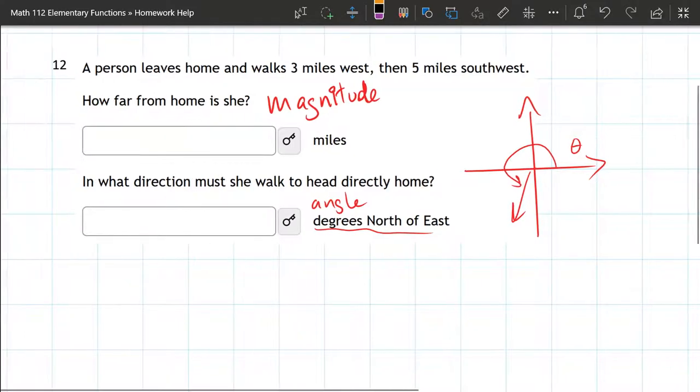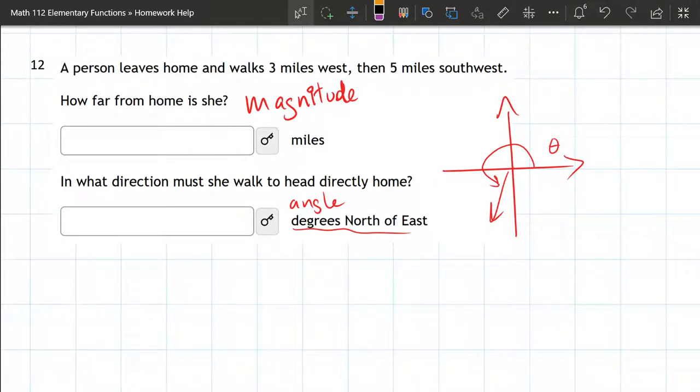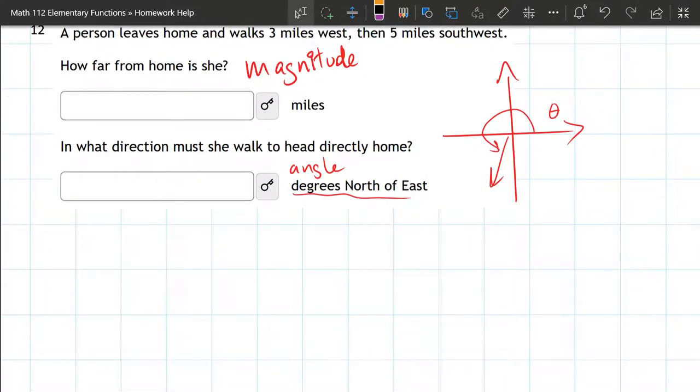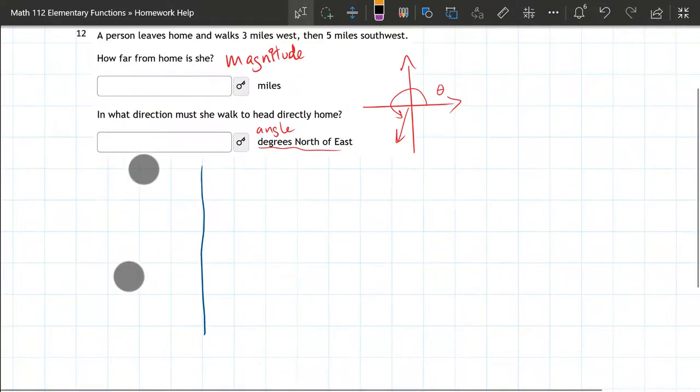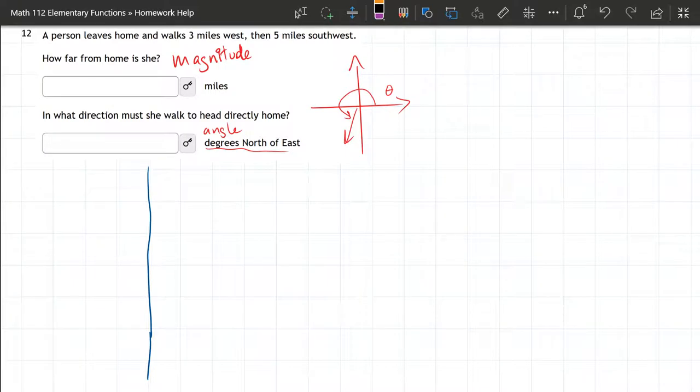Now we need to figure out what two vectors make this walk. The first one is super easy: three miles west. We're going to draw a grid right here. Three miles west, so this will be three miles directly west. I'm going to call it V1 for vector one, and we see it's going three to the left, so it's negative three in the x and zero in the y.